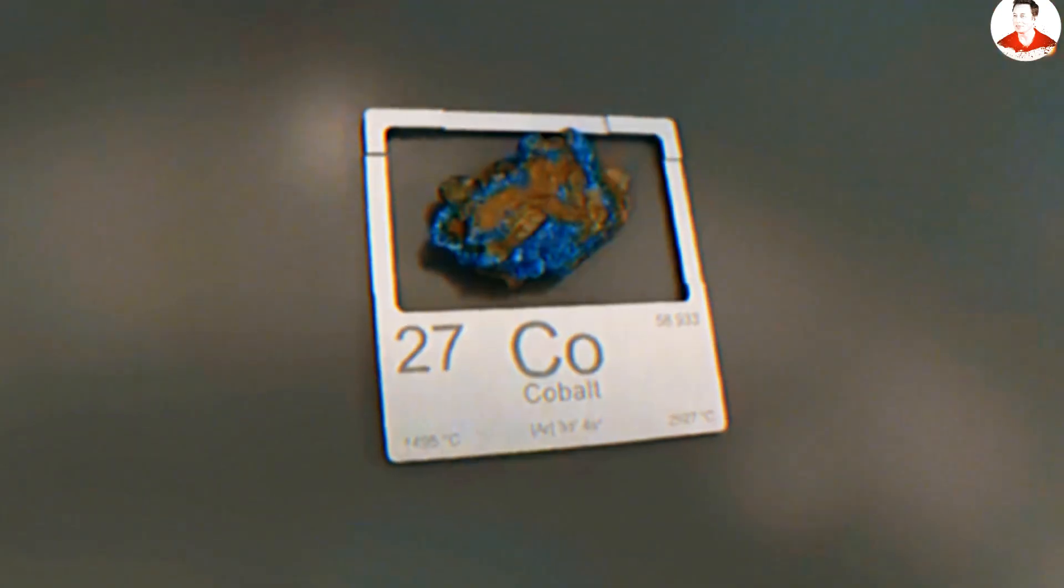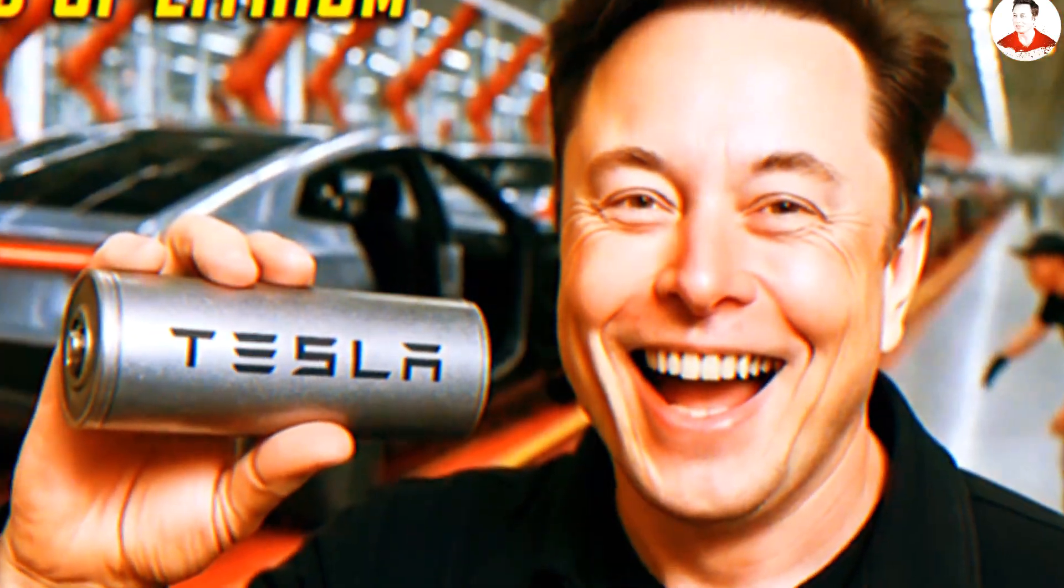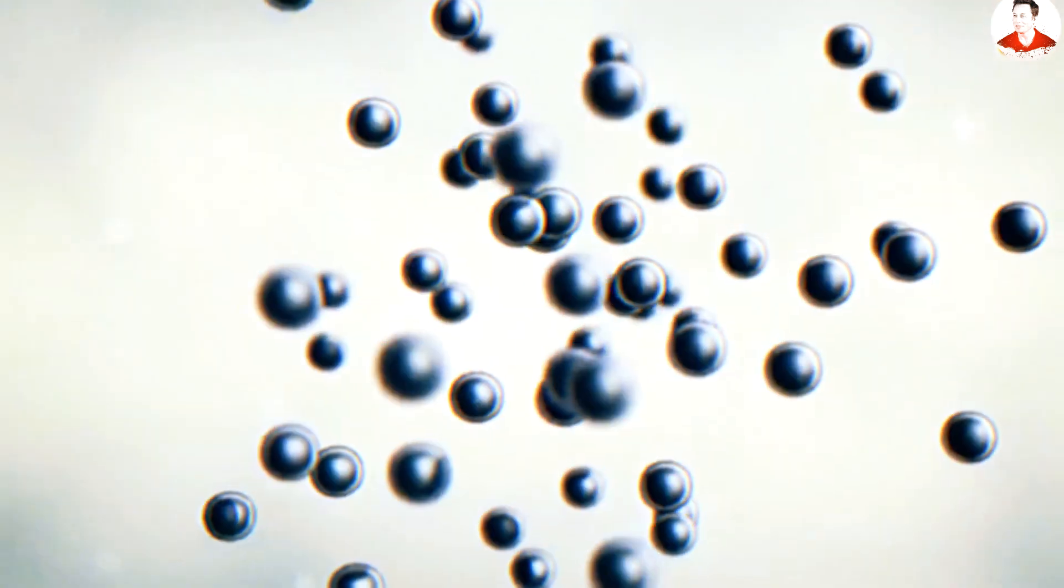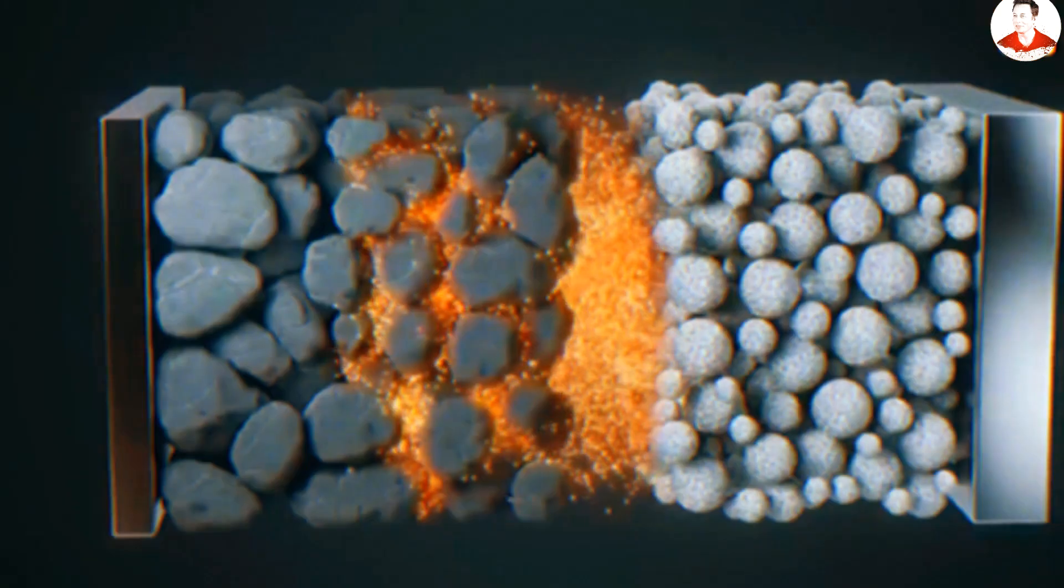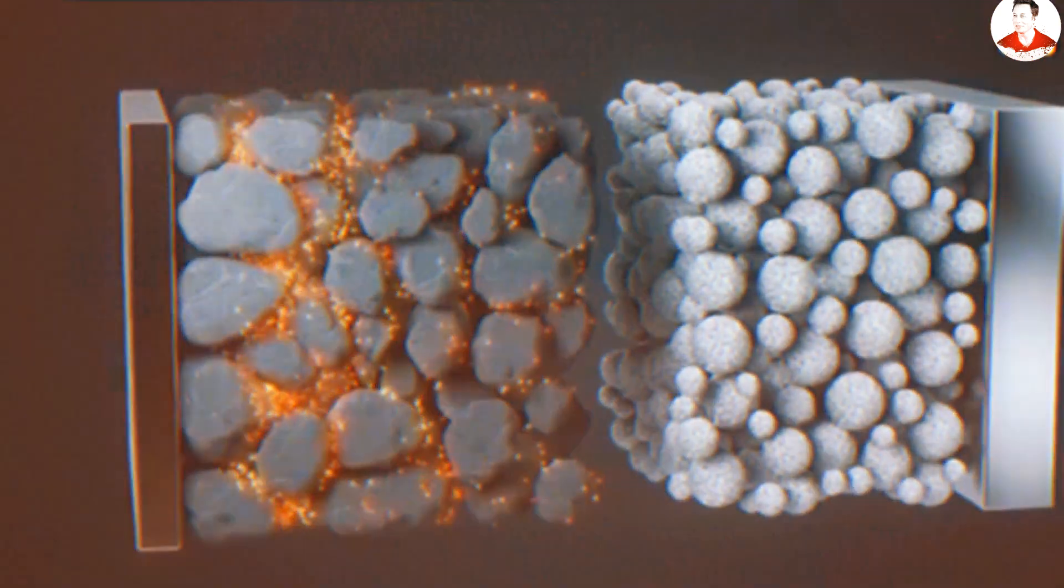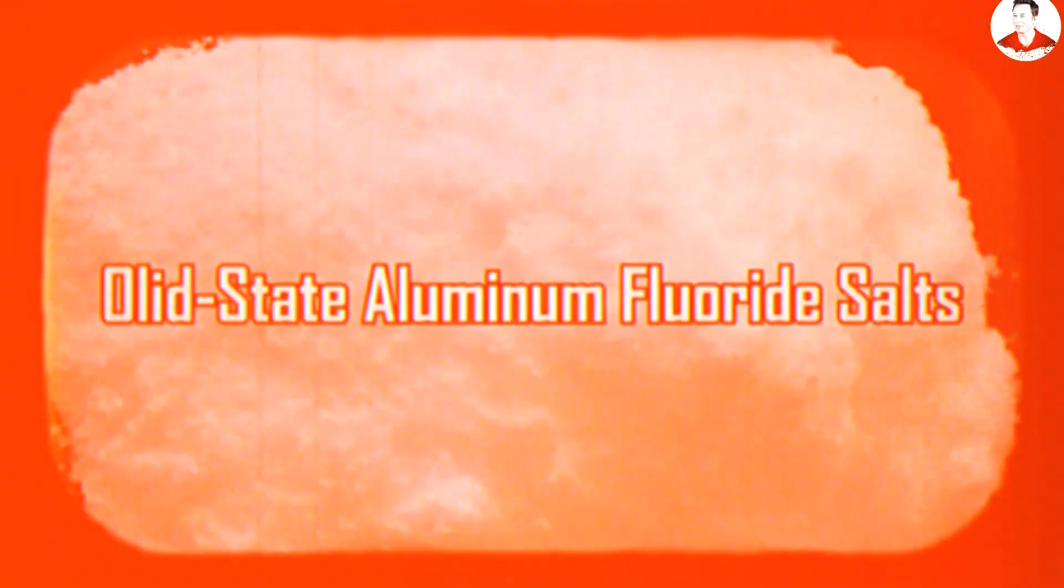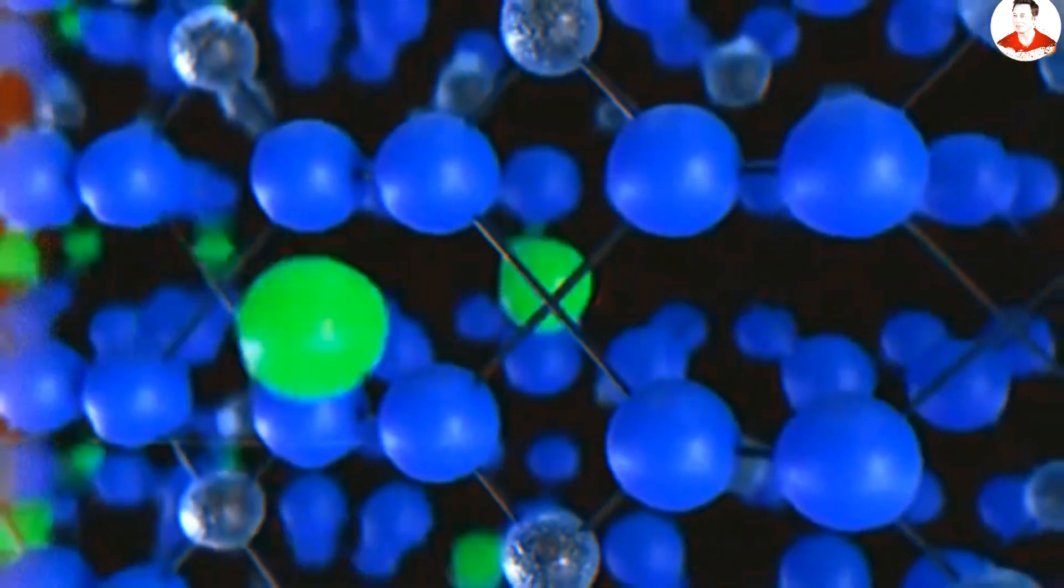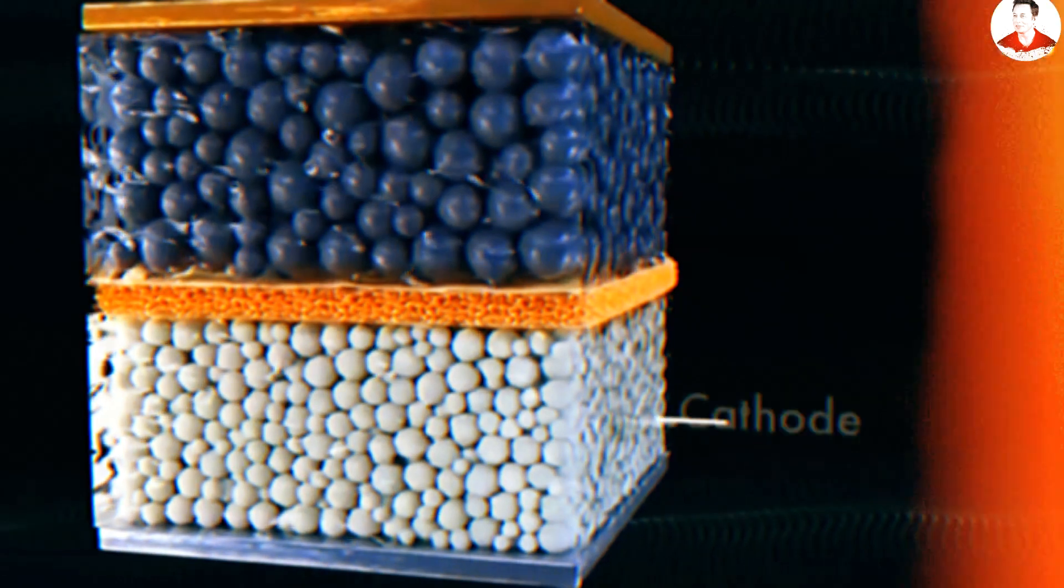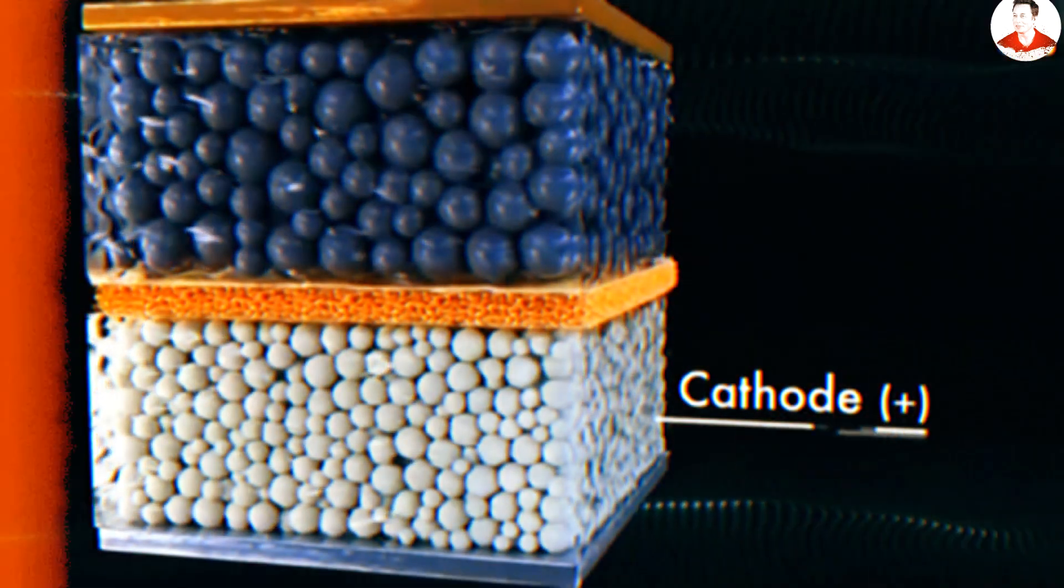But the weight savings don't stop there. The electrolyte system represents another crucial breakthrough. Traditional lithium-ion batteries rely on heavy liquid electrolytes that require extensive safety containment systems. The aluminum-ion battery uses solid-state aluminum fluoride salts with engineered porous structures that eliminate the need for these heavy liquid components. This innovation saves 5 to 10 percent of the total battery weight while simultaneously boosting safety by eliminating the risk of thermal runaway that plagues liquid electrolyte systems.